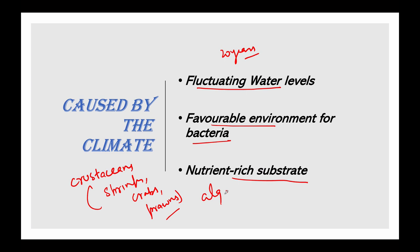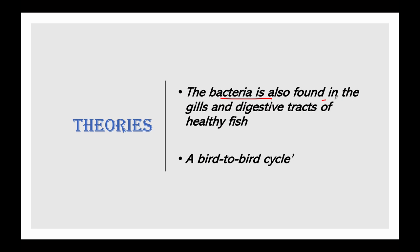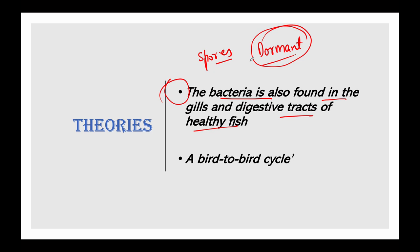There are two theories about how the bacteria spread. In one theory, the bacteria is found in the gills and digestive tracts of fish; it reproduces through spores that remain dormant for years, resistant to temperature changes and drying. When favorable conditions arise, these spores become active. After monsoon, receding water levels may have increased salinity, causing organism deaths and activating the spores.